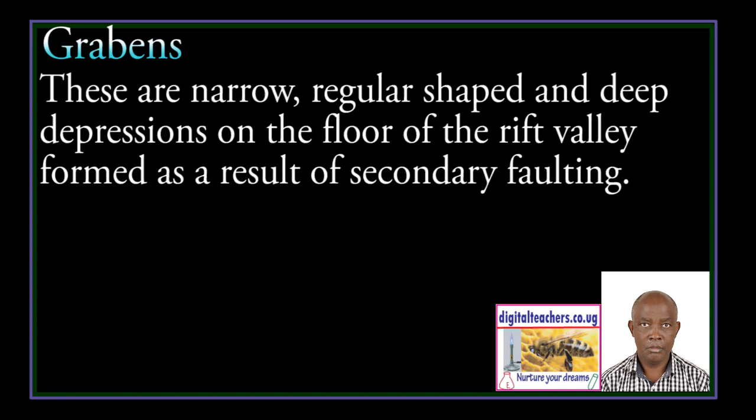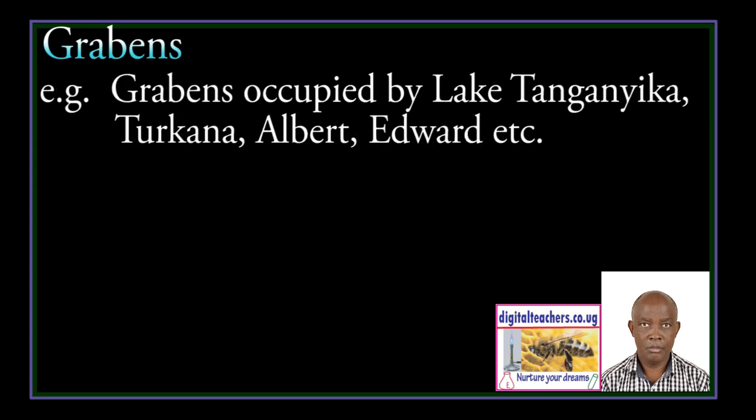Grabens. These are narrow, irregular shaped and deep depressions on the floor of the rift valley, formed as a result of secondary faulting. For example, grabens are occupied by Lake Tanganyika, Lake Turkana, Lake Albert, and so on, as illustrated below.